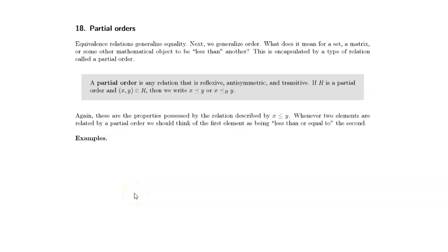In the last couple videos, we talked about equivalence relations, which are ways to generalize the idea of equality between objects that aren't necessarily equal. Now we're going to generalize the idea of order with partial orders. What does it mean for a set, a matrix, or some other mathematical object to be less than another one? A partial order is going to be any relation that is reflexive, anti-symmetric, and transitive. Notice this is almost the same definition as that of an equivalence relation, except we're requiring anti-symmetric — this relation is only going to flow one way.